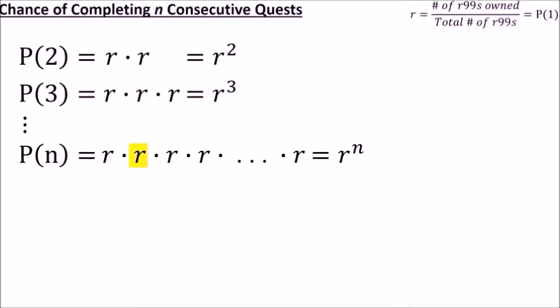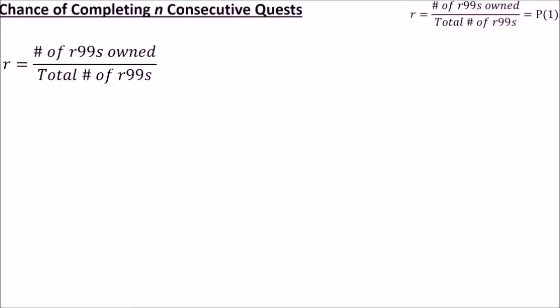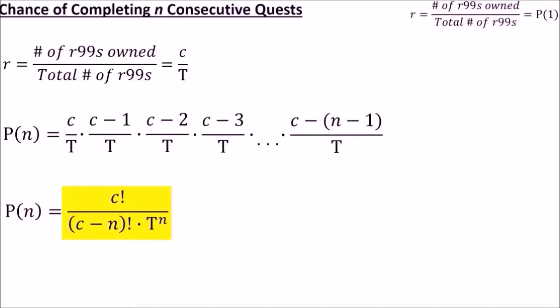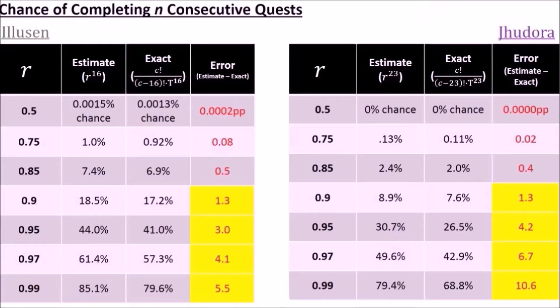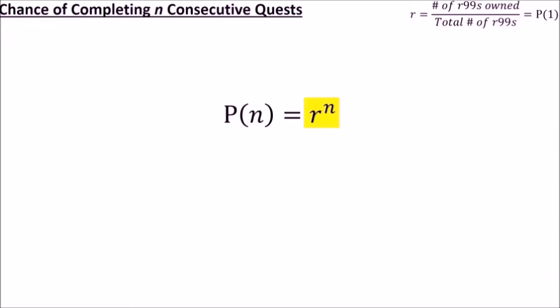You might have noticed that I used the same r value each time, which assumes your collection stays the same for every quest. Realistically, you wouldn't wait to replace each item before moving on, so your collection would decrease by 1 after each level. For the exact formula, we'll go back to the fraction of rarity 99s owned divided by total rarity 99s, and we'll assign variables to each part. As you work your way through the quest, the numerator would decrease by 1 every time you used up an item. So the exact formula for completing some number of quests in a row would look like this, which simplifies down to this, which is not an easy formula to work with. And as it turns out, the difference in accuracy is extremely small for collections below 95% complete. So if you want to know your chances of succeeding on a single run, this r to the n estimation works just fine.